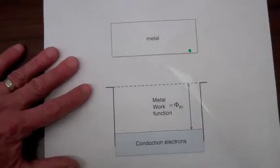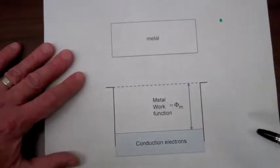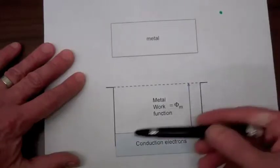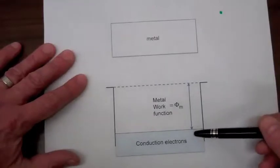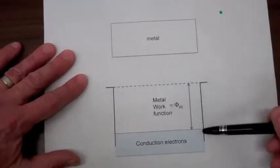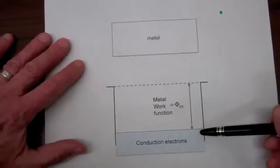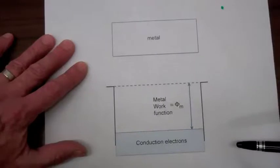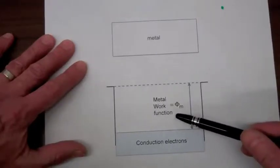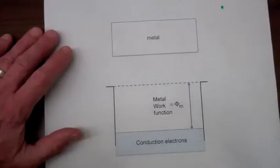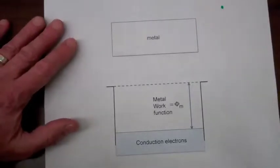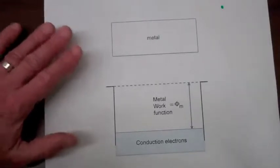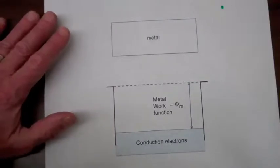Below is an illustration of the energy associated with our conduction electrons. So down here would be the conduction electrons, and here would be the edges of the metal. When an electron encounters the edge, it cannot get out because it would require an additional amount of energy to go over this barrier, and that energy is referred to as the metal work function, and the symbol is phi sub m. Typical metal work functions are on the order of 4.2 to 5.3 electron volts.